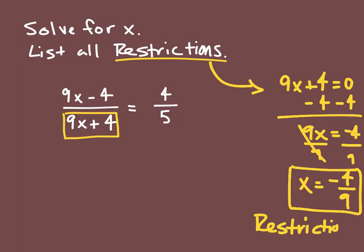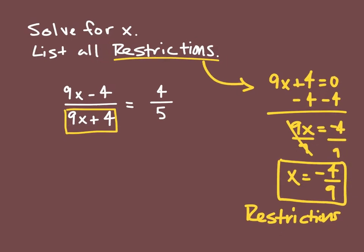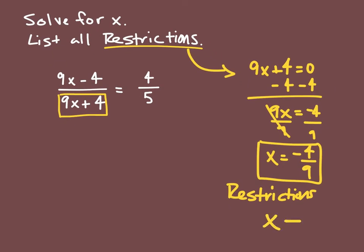Based on this, my restrictions say that x cannot be equal to negative 4 over 9. Because if I plug this value into this equation, this will make my denominator zero, and you can't divide by zero.